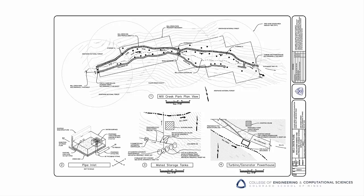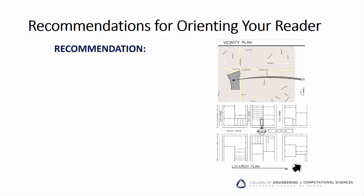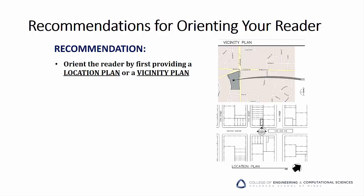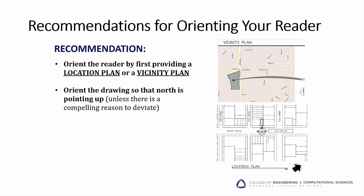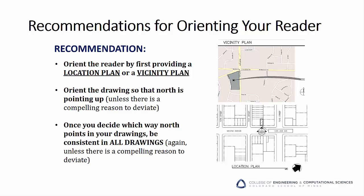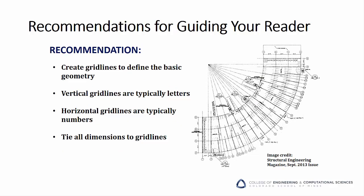One key to a great drawing set is to make sure your reader is always clearly oriented with respect to the site. Orient the reader by first providing a location map or a vicinity plan in your drawing package. Then, unless there's a compelling reason to do otherwise, orient the drawing so that north is pointing up. Once you decide which way north points in your drawings, be consistent in all drawings. It is also recommended that you use gridlines in your drawing views. Gridlines can be extremely useful in guiding your reader during a design review, and also allow people to ask targeted questions by clearly identifying features in your drawing set. Typically, vertical gridlines are labeled with letters and horizontal gridlines with numbers — so in a discussion, a person could say 'I noticed on page 3, zone A5, that...' You get the idea.